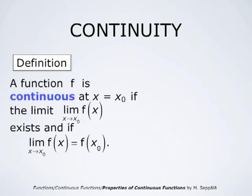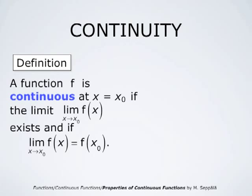A function f is continuous at a point x equals x₀ if the limit of f(x) as x approaches x₀ exists and equals the value of the function at that point. If f is not continuous at x₀, it is said to be discontinuous. Here is a graph of a function which is discontinuous at the point where its values jump; otherwise, this function is continuous.